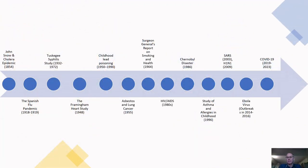Let's embark on an extraordinary journey through the history of epidemiology, a field marked by groundbreaking milestones. We begin in 1854 with John Snow's revolutionary study of the cholera epidemic in London — his work laid the foundation for modern epidemiological methods. Moving along to the mid-20th century, we see the groundbreaking Framingham Heart Study, which began in 1948 and reshaped our knowledge of cardiovascular disease risk factors. Then we arrive at the recent and ongoing challenge of the COVID-19 pandemic, which has tested our public health strategies and spurred innovations in epidemiological research and data analysis.